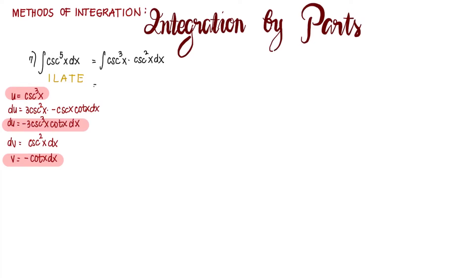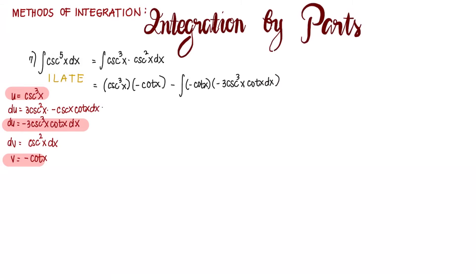So we substitute into our integration by parts formula. That's u times v: cosecant cubed x times negative cotangent x, minus the integral of v times du, which is negative cotangent x times negative 3 cosecant cubed x cotangent x dx. Rearranging, that's negative cosecant cubed x cotangent x minus 3 times the integral of cosecant cubed x cotangent squared x dx.